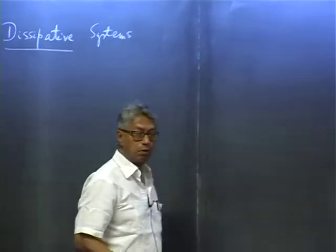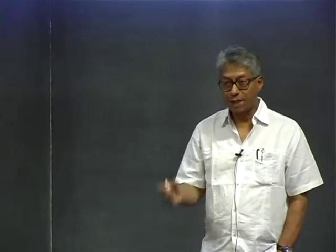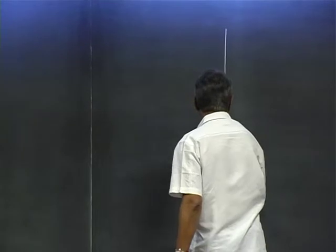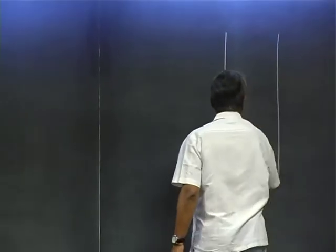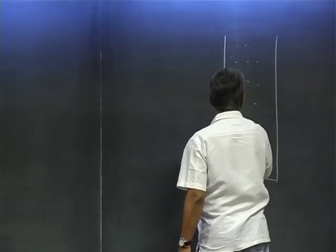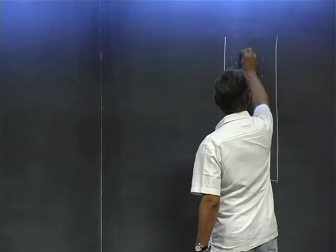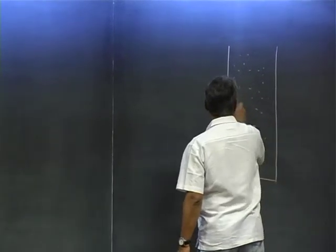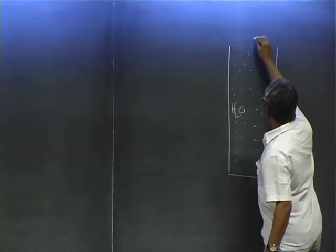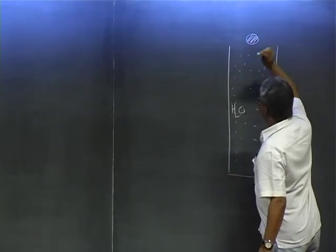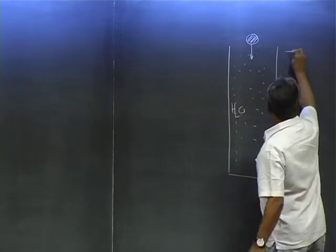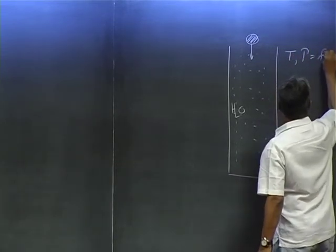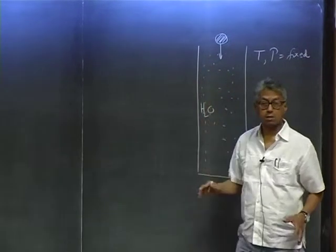Let me first explain to you what I mean by dissipation, dissipative systems. I would like to take you back to some undergraduate classes. We actually used to do an experiment where you would take a tall jar of water and drop a ball — assume it to be spherical, a solid ball — through this water. The temperature is fixed, pressure is fixed.